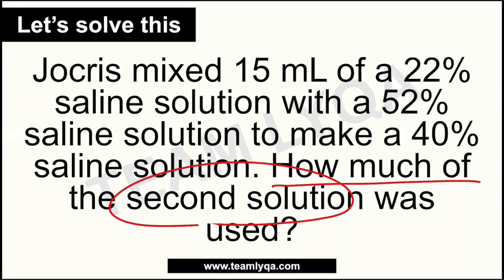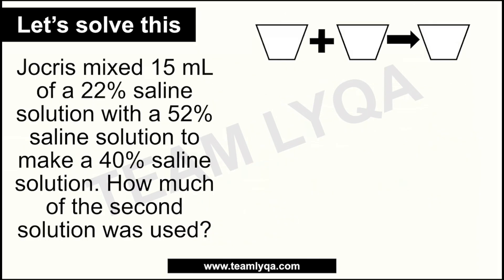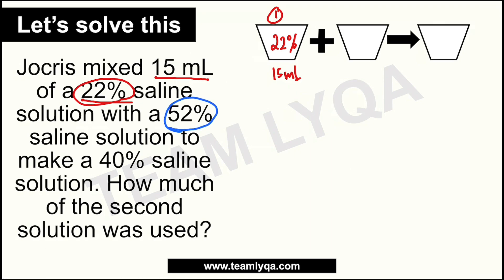Anong gagawin natin dito? Like yung mga naunang parts ng series, hahanapin lang natin yung mga buckets na pinag-uusapan. Yung unang bucket: 15 ml ng 22% saline solution — that would be 22% concentration, 15 ml amount. Yung bucket number 2: 52% concentration, pero hindi natin alam kung ilan ml, so pwede siyang maging x — siya yung nawawala. Yung third bucket yung resulta: 40% saline solution, at ang kanyang dami ay 15 plus x.